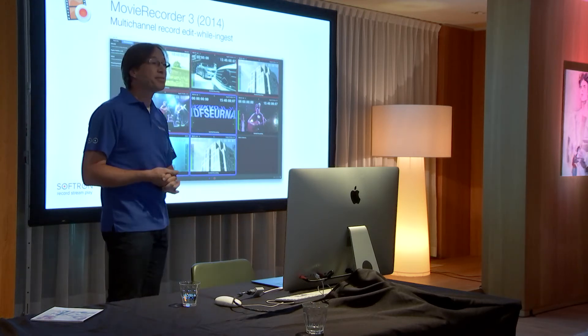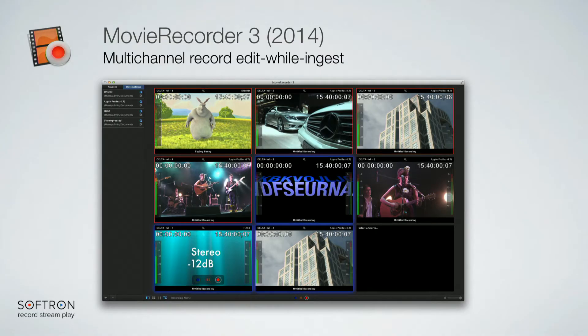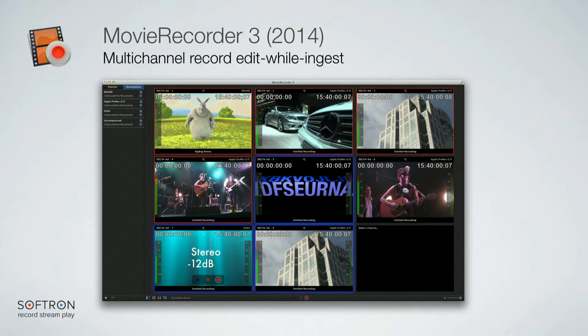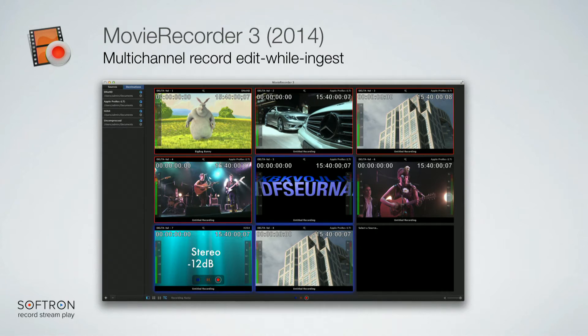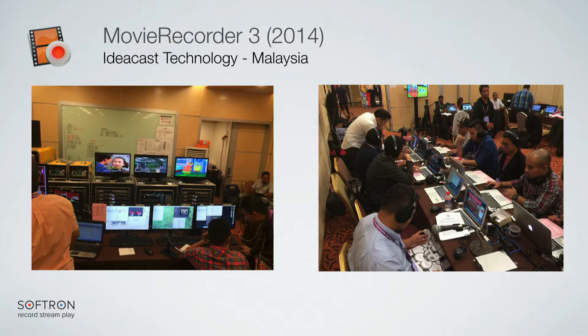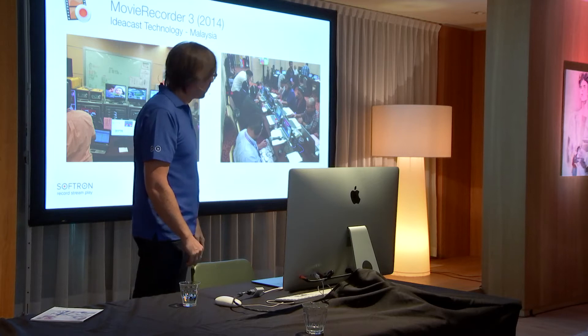In 2014, we came with MoveRecorder 3. When we started with MoveRecorder 1 we were happy to do one channel of SD, so the interface was designed for just one channel. With MoveRecorder 3 we had more powerful computers and people wanted multiple channels, so we built a user interface designed for multi-channel control all from one place. One setup was with IdeaCast Technology in Malaysia, recording multiple channels where the whole newsroom was editing, because you can edit while recording on shared storage — editors editing on the fly.